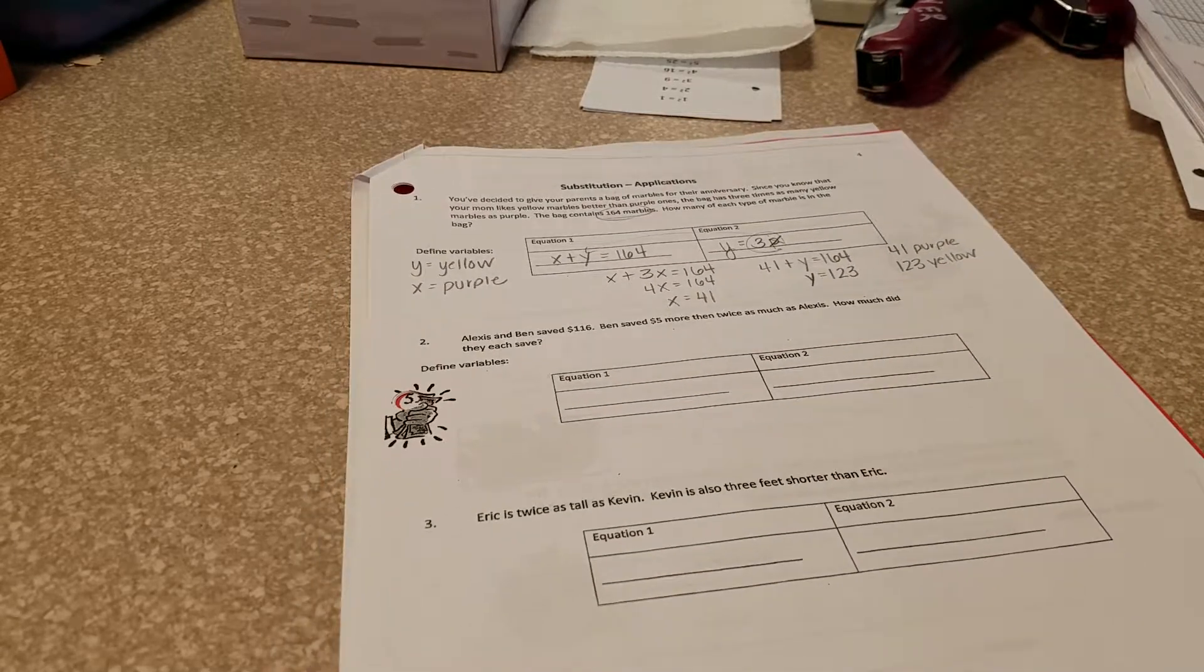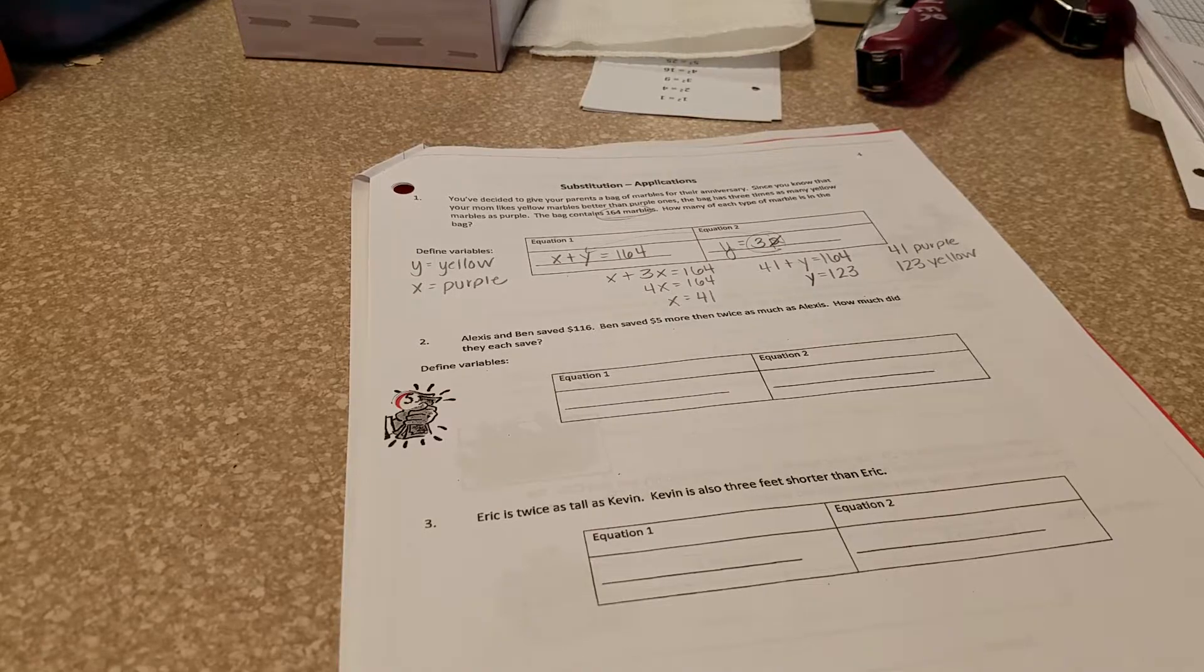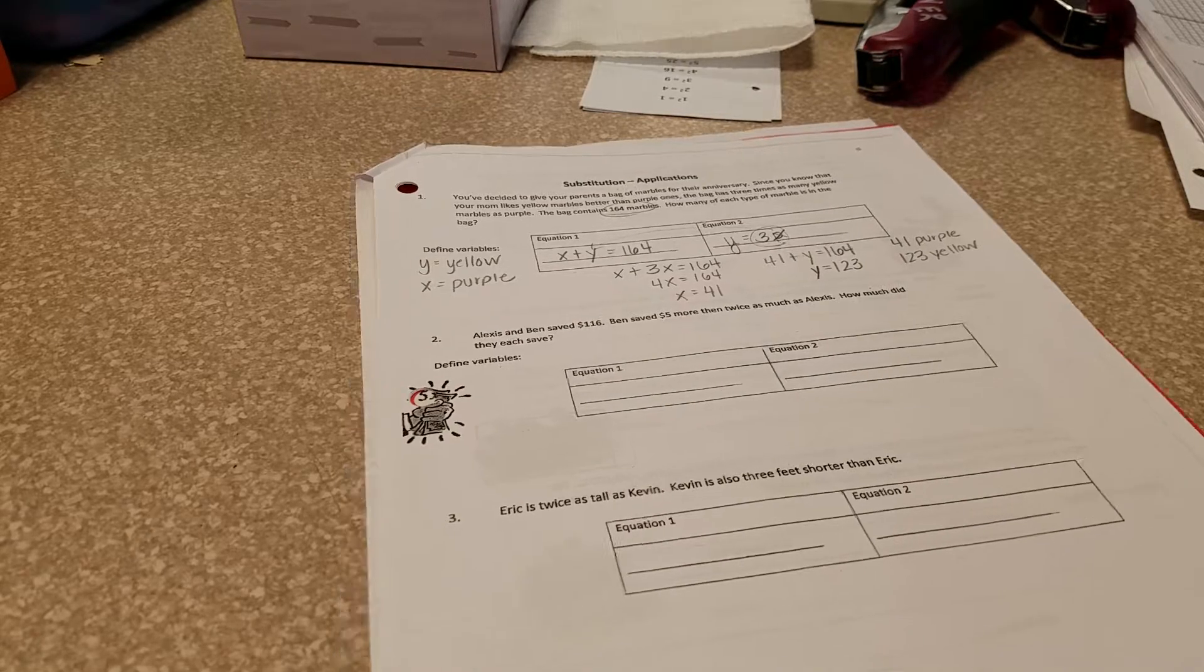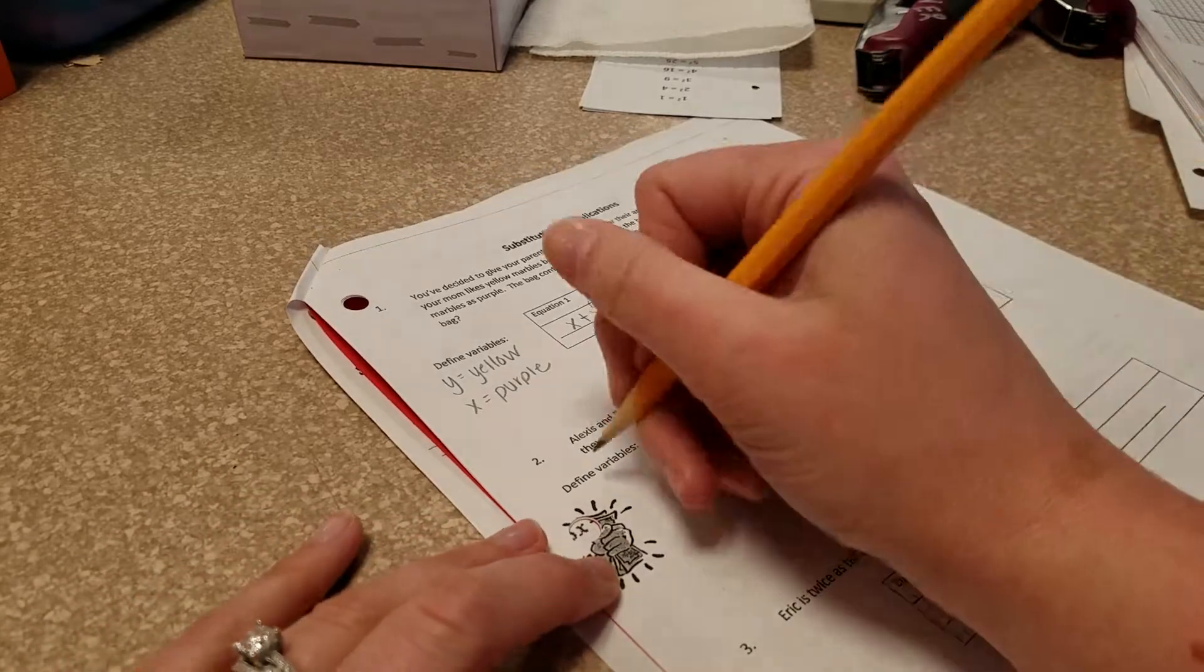Number two, Alexis and Ben saved $116. Ben saved $5 more than twice as much as Alexis. How much did each of them save?